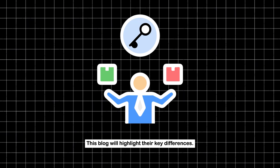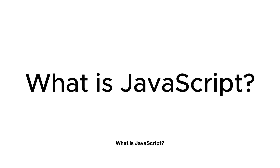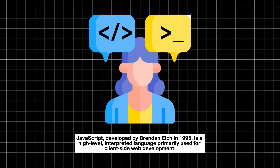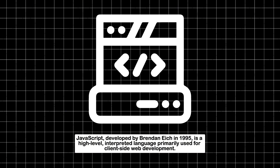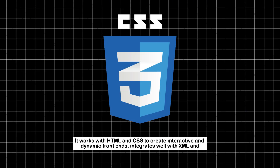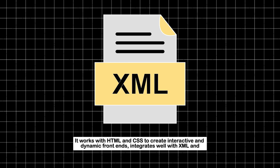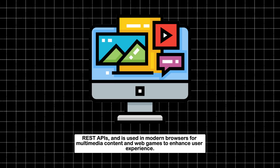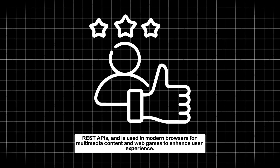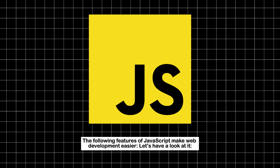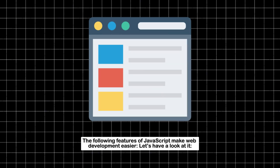This blog will highlight their key differences. JavaScript, developed by Brendan Eich in 1995, is a high-level interpreted language primarily used for client-side web development. It works with HTML and CSS to create interactive and dynamic front ends, integrates well with XML and REST APIs, and is used in modern browsers for multimedia content and web games to enhance user experience.